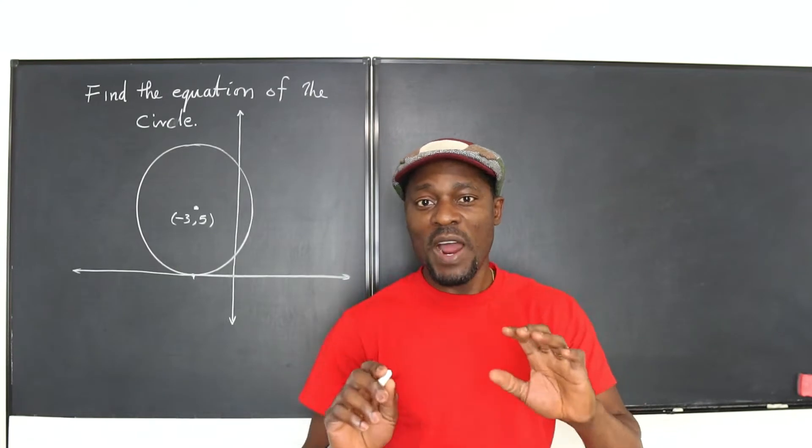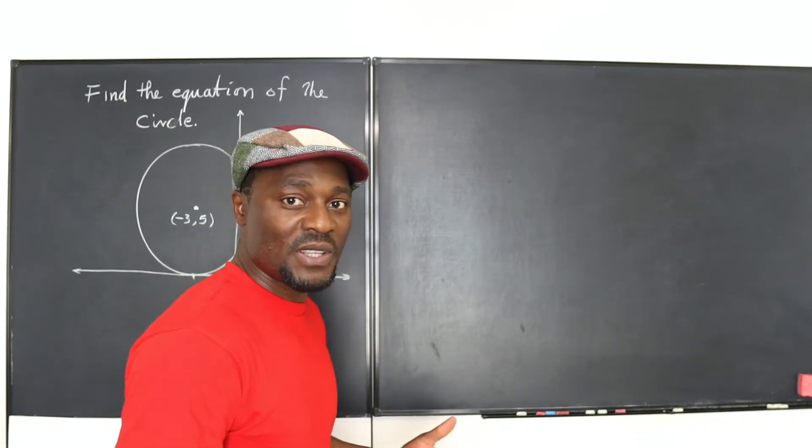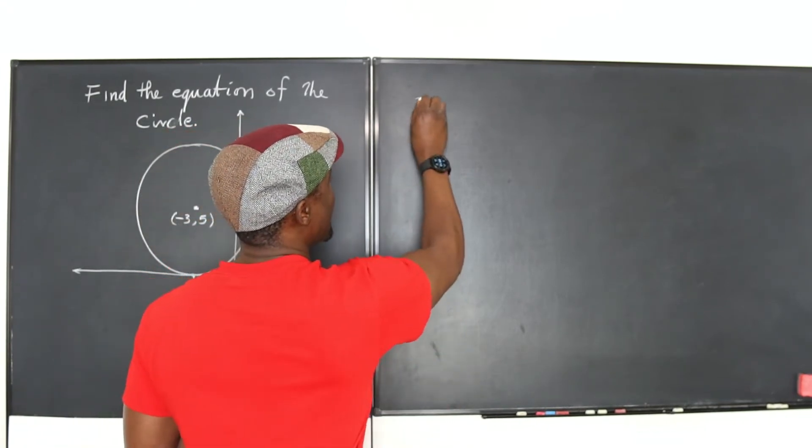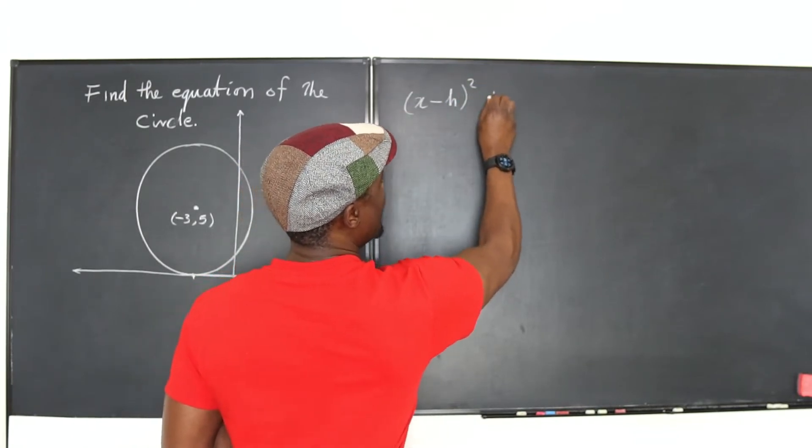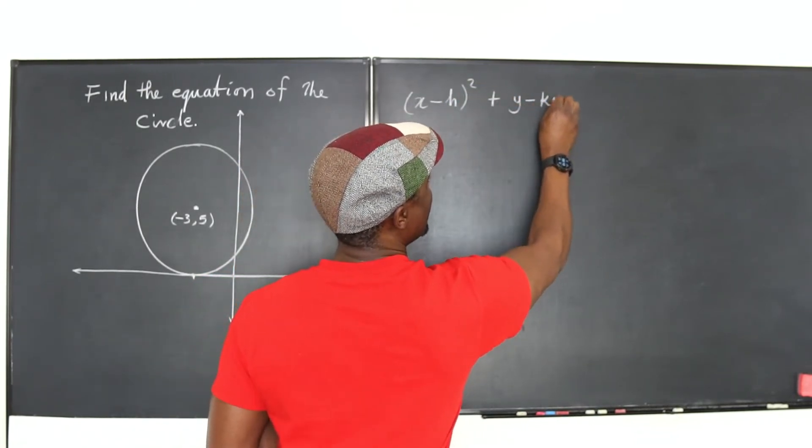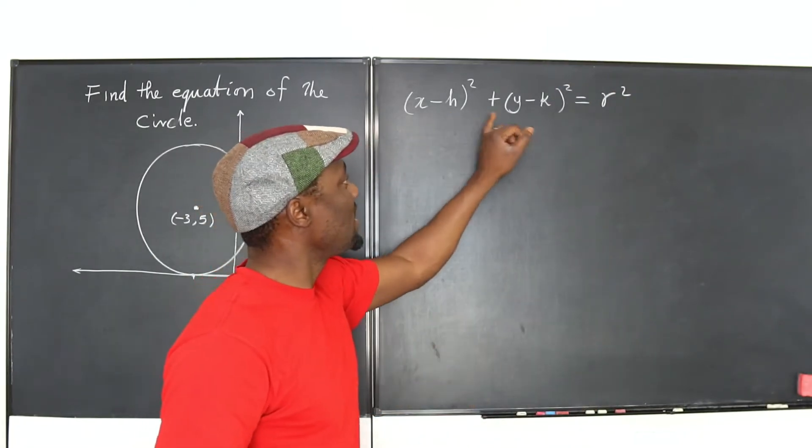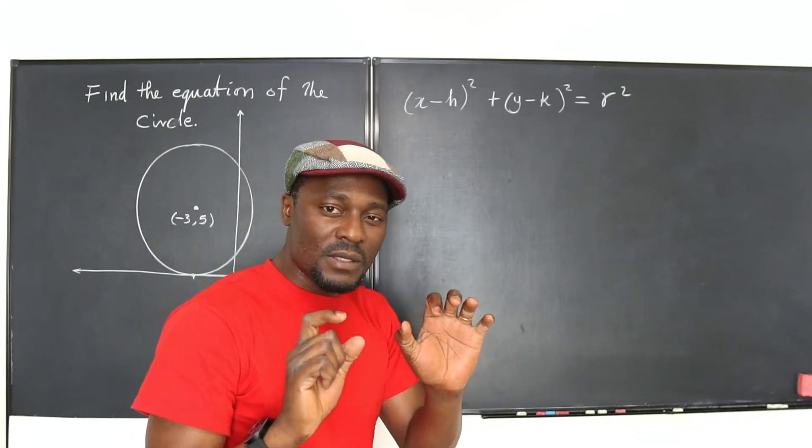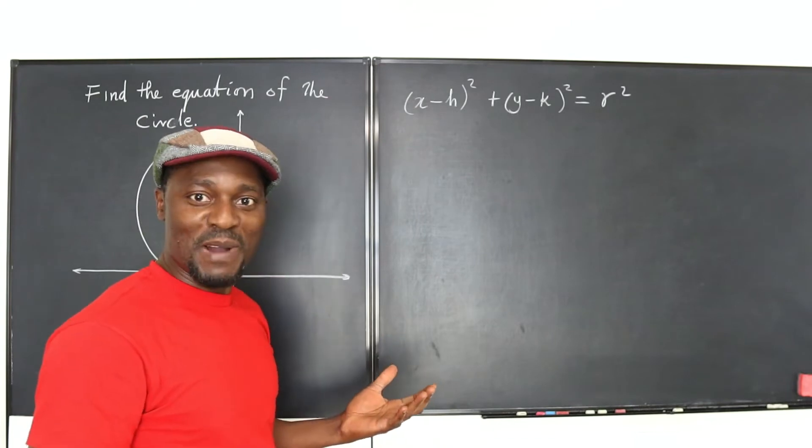But I know that to write the equation of a circle, I just need to know what the h is and what the k is. Remember that the standard equation of a circle is x minus h squared plus y minus k squared equals r squared. I know that h k is the coordinate of the center.